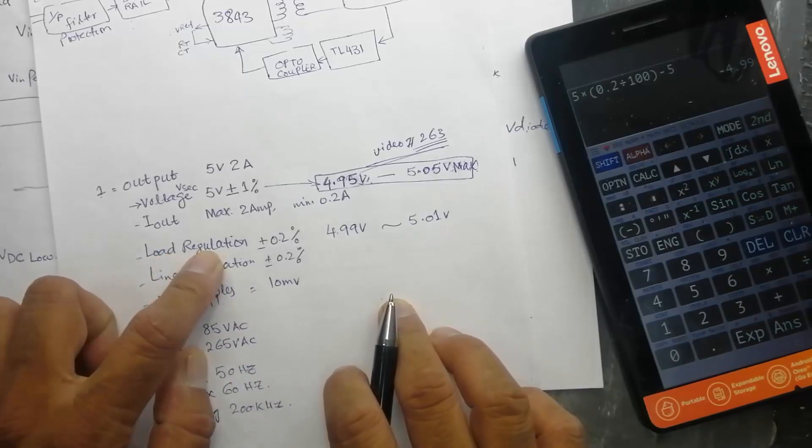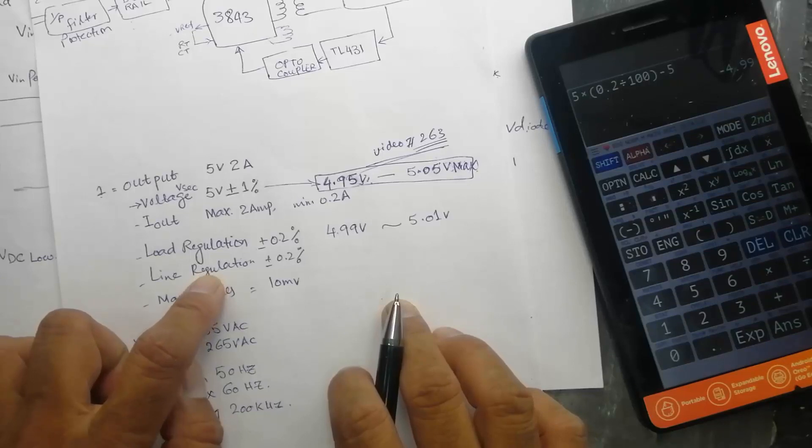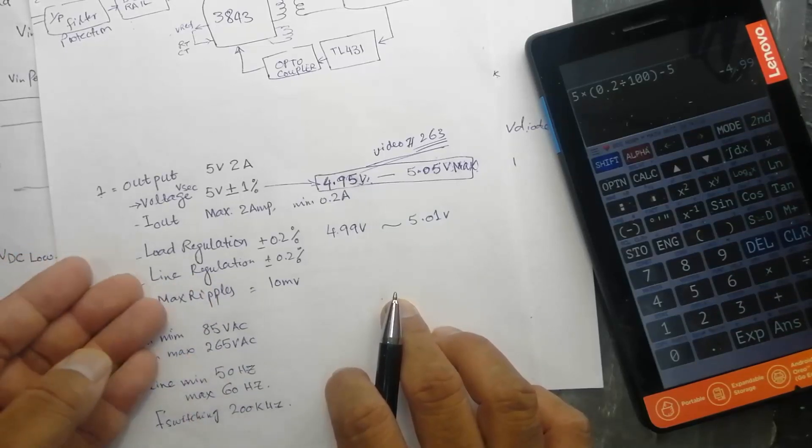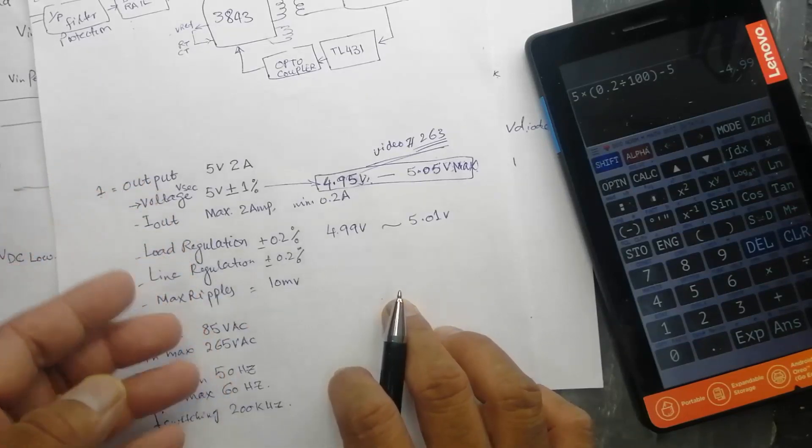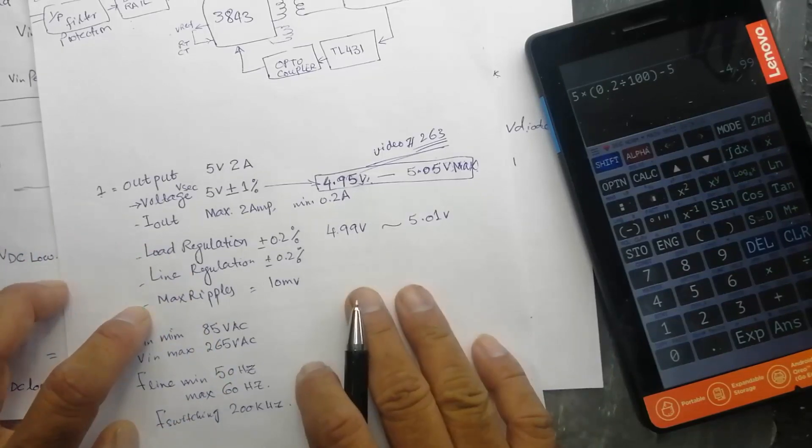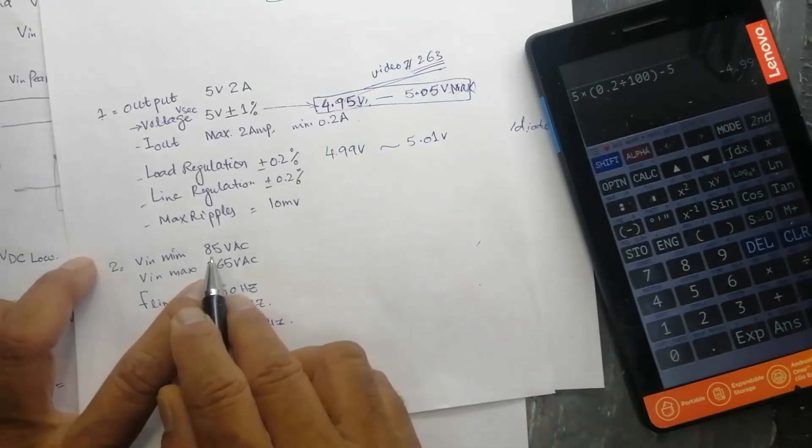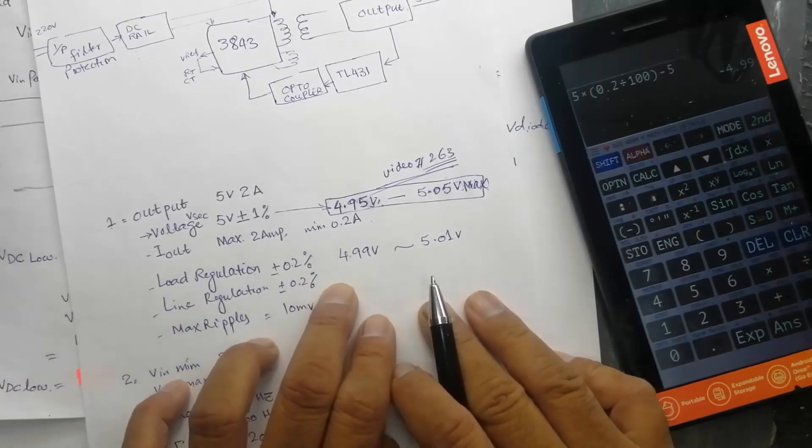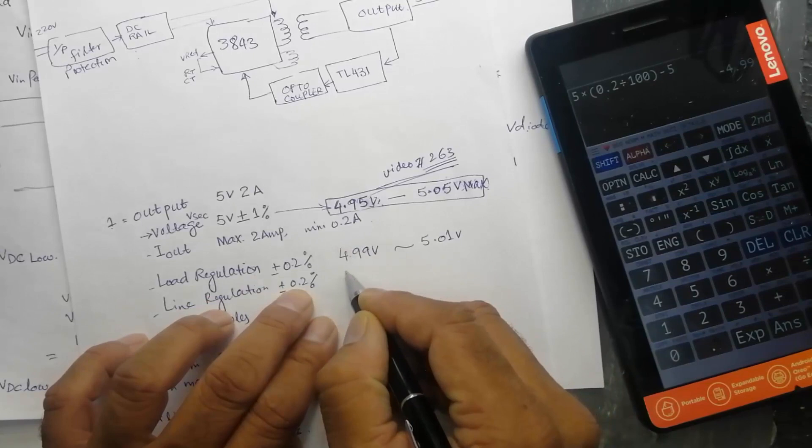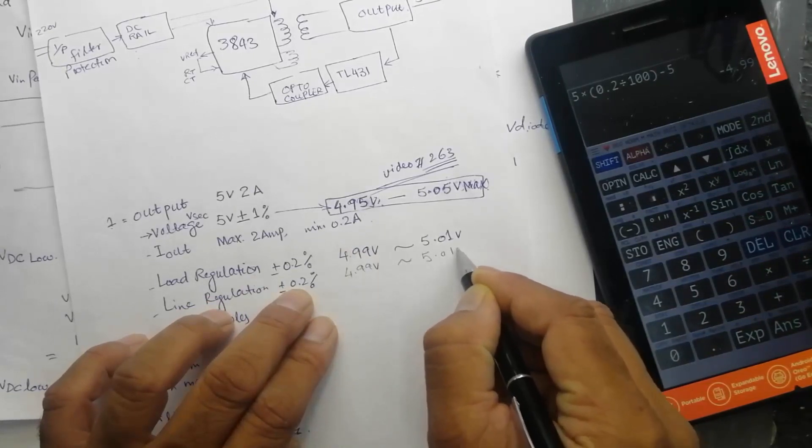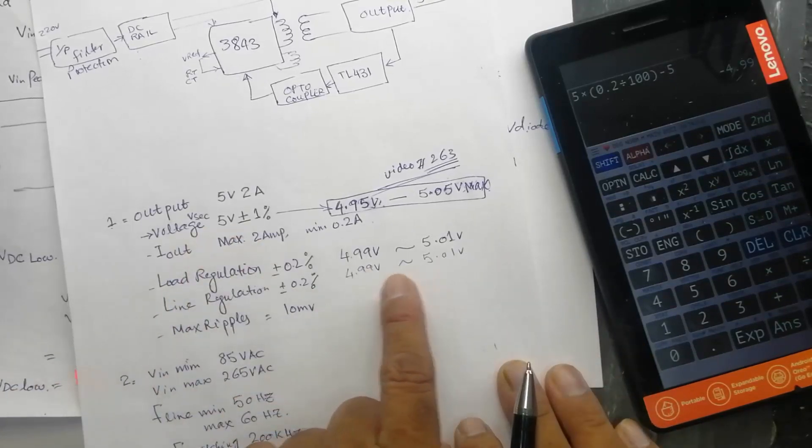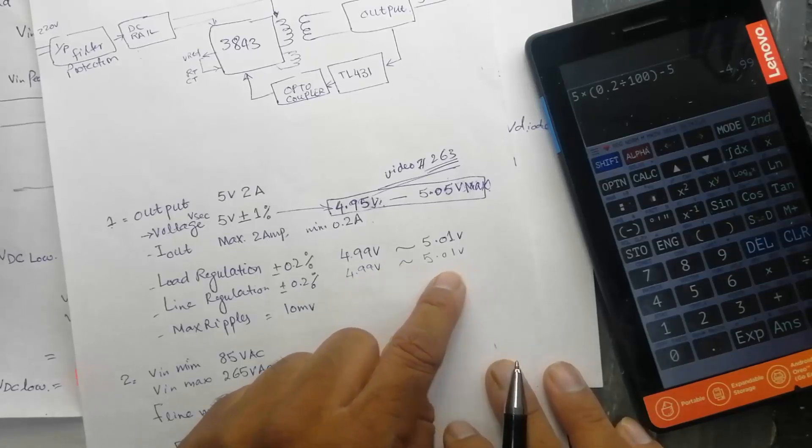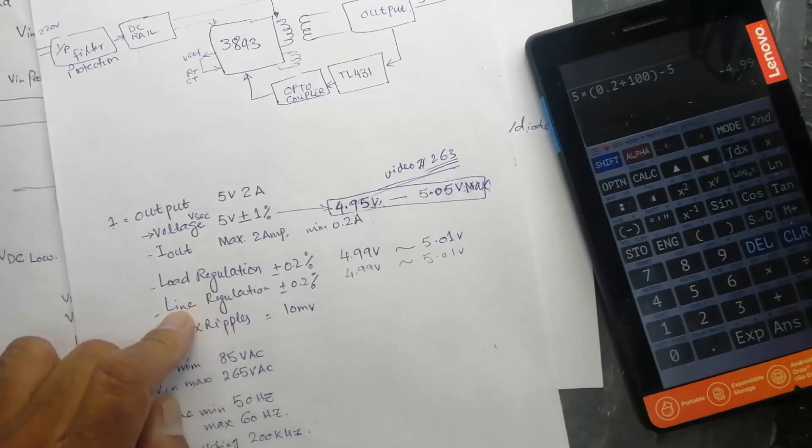This is the load effect. If we have a line variation - suppose this power supply was working at minimum voltage 85 volt and suddenly the voltage increased up to 220 volt, 245 volt, 265 volt. The maximum limit which we discussed here 85 to 265 volt. If we have any fluctuation in the input side how much the output should vary? The same 0.2 percent, that is 4.99 volt to 5.01 volt. If it is giving 5 volt the output can vary 0.01 volt. It is called line regulation.